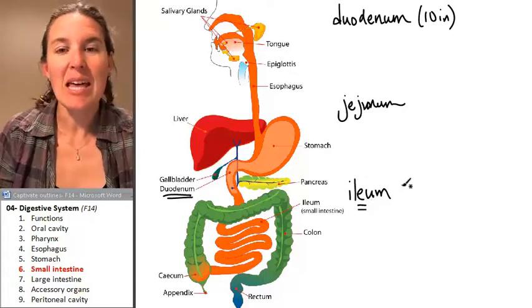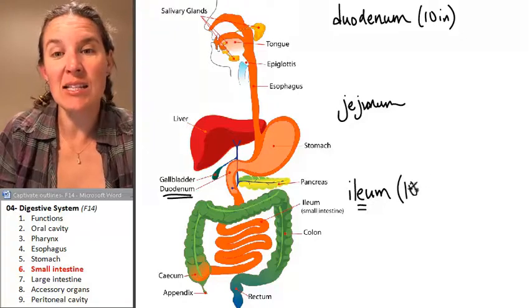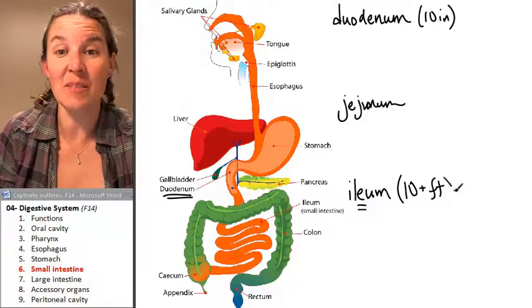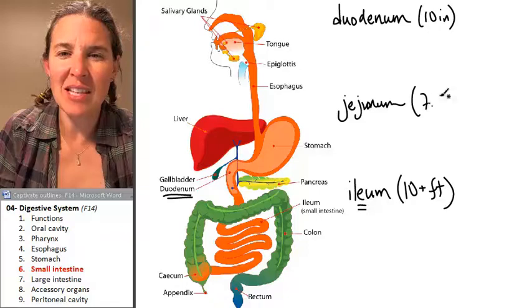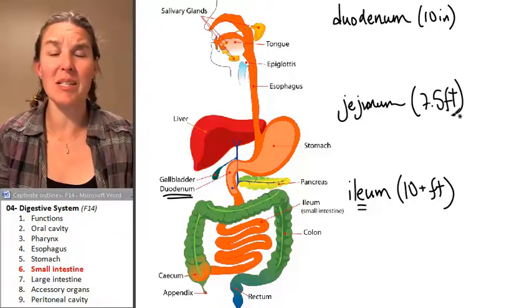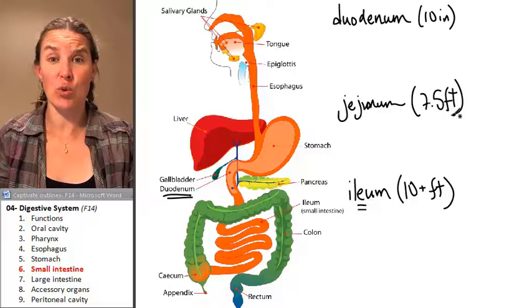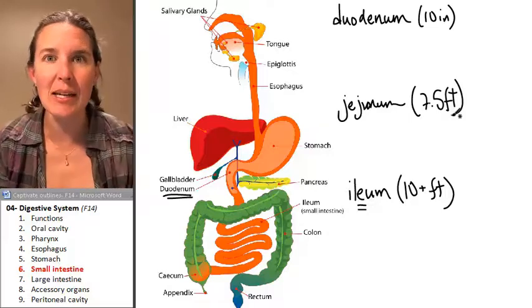The ileum is the longest. It's over ten feet long. The jejunum, I think, was seven and a half feet long. Dude, the small intestine is huge. It's really long. And what's happening in here?